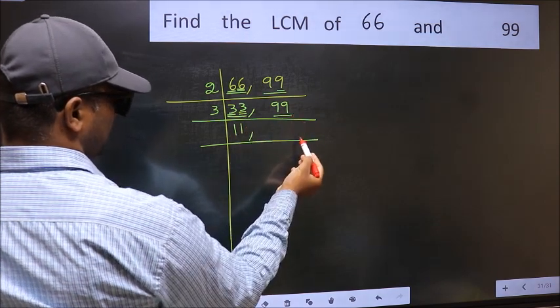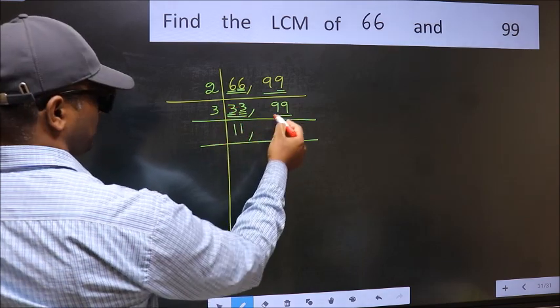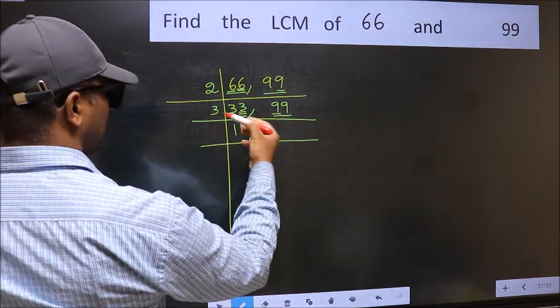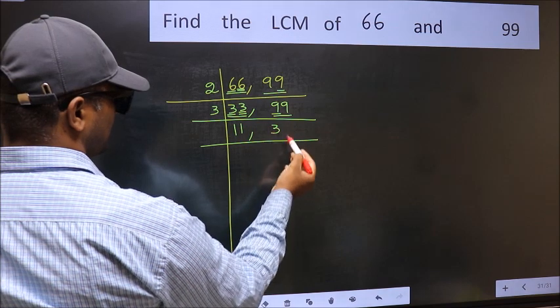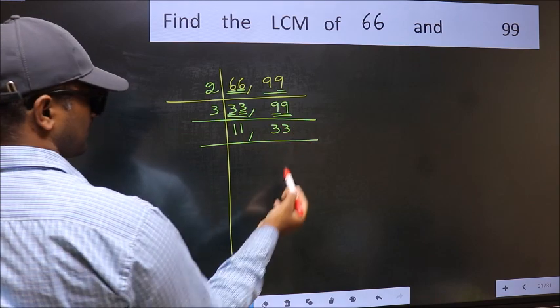The other number 99, 99 is divisible by 3. First number 9, when do we get 9 in 3 table? 3, 3s 9. The other number 9, when do we get 9 in 3 table? 3, 3s 9.